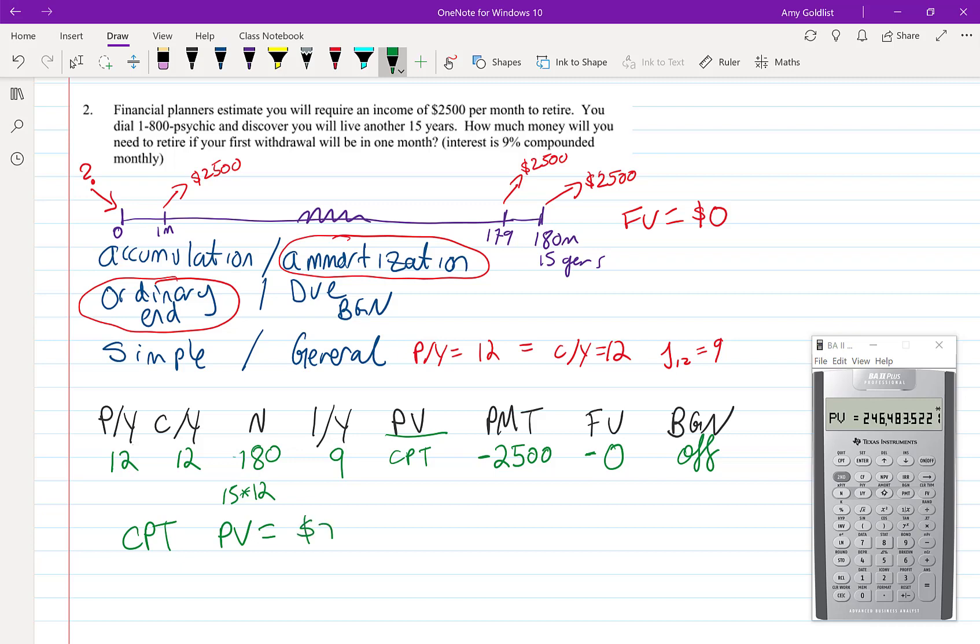I need to have $246,483.52 to retire today. That's great if I have that much money. Later on we're going to talk about how you would go about trying to save that much money which makes a lot more sense.